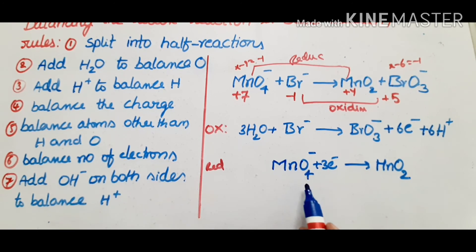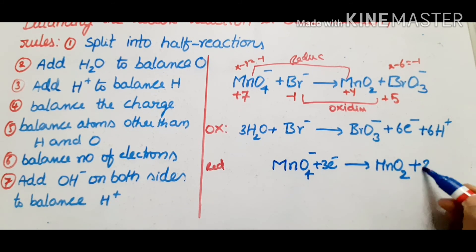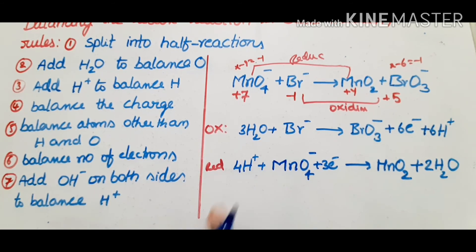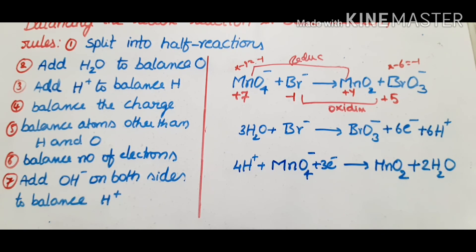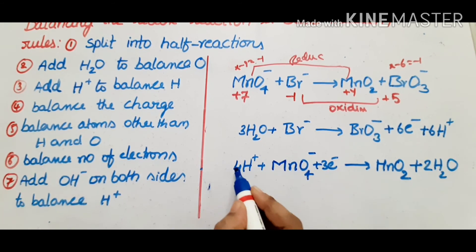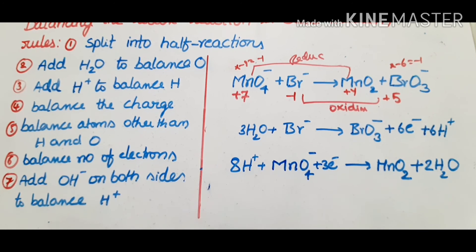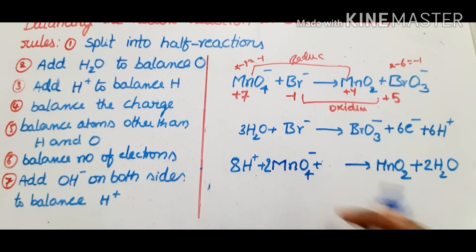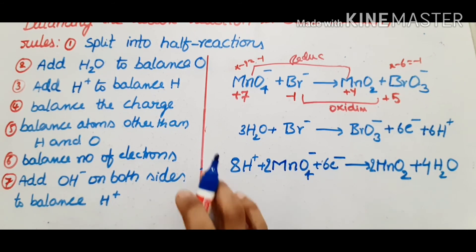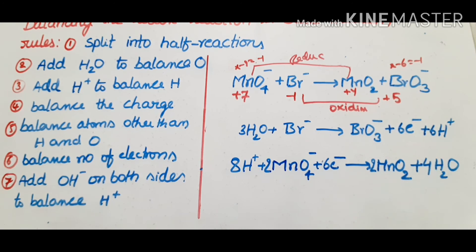Balance the reduction half reaction: MnO4⁻ has 4 oxygens and MnO2 has 2, so add 2H2O to the right side. Then add 4H+ to the left to balance hydrogen. Then balance the charge with electrons — 3 electrons. Now there are 6 electrons in oxidation and 3 in reduction, so multiply the reduction half reaction by 2: 2MnO4⁻ + 8H⁺ + 6e⁻ → 2MnO2 + 4H2O. Now both sides have 6 electrons.